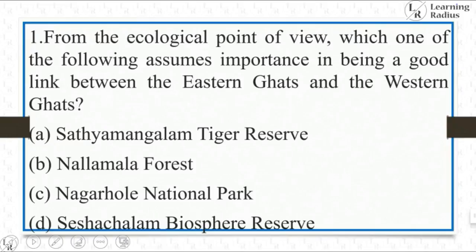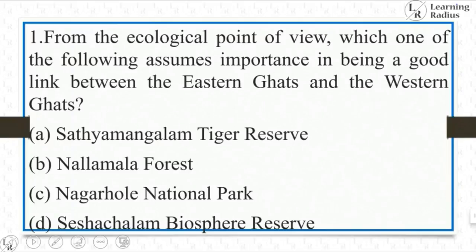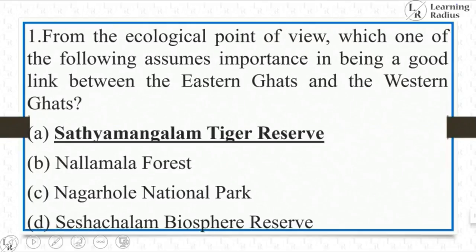The very first question: from the ecological point of view, which one of the following assumes importance in being a good link between Eastern Ghats and Western Ghats? Options: Satyamangalam Tiger Reserve, Nallamala Forest, Nagarhole National Park, Seshachalam Biosphere Reserve. It's a very easy direct question. The answer is Satyamangalam Tiger Reserve.